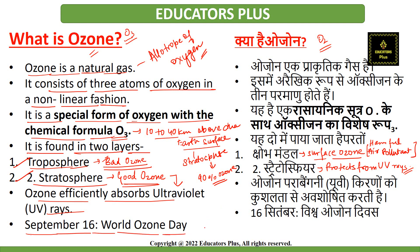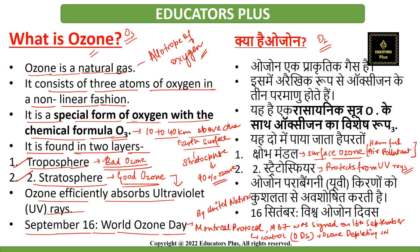September 16th is observed as World Ozone Day, proclaimed by the United Nations as the International Day for the Preservation of the Ozone Layer. World Ozone Day also marks the Montreal Protocol, which was signed on 16th September 1987 to control the production and consumption of ozone-depleting substances.